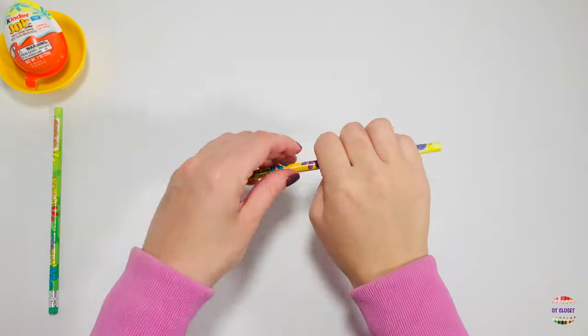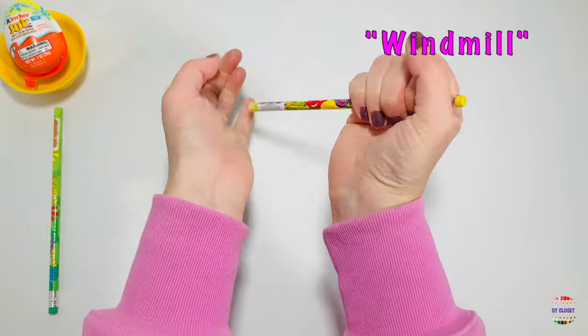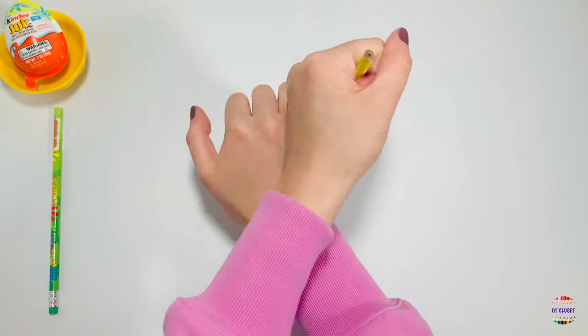Hold on to your pencil by crossing your hands and pretend it's a windmill. Turn for ten seconds.